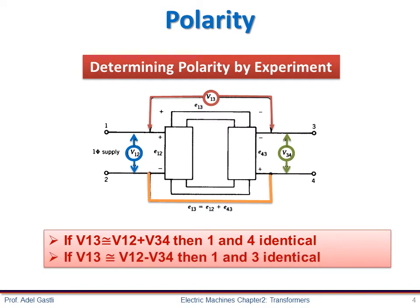But if V13 equals V12 minus V34, then terminals 1 and 3 have identical polarity. According to the connection and polarity of the transformer given in this example shown on this slide, voltmeter V12 will show the summation of primary and secondary voltages V12 and V34. This is called an additive condition.